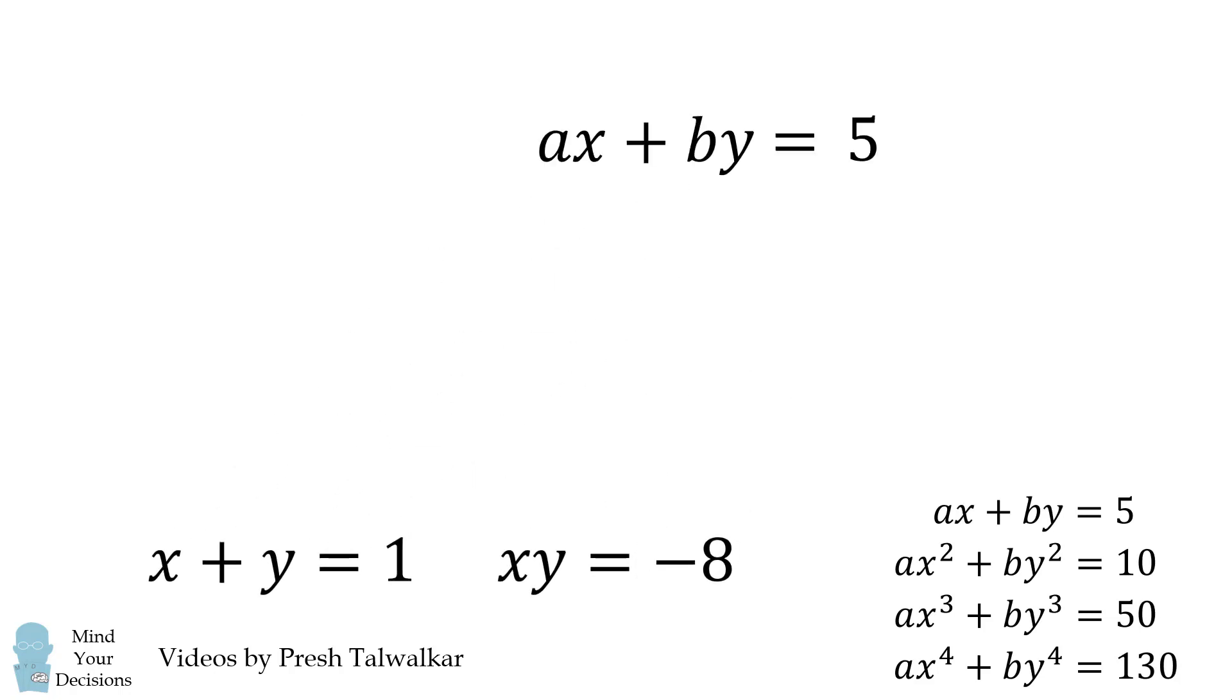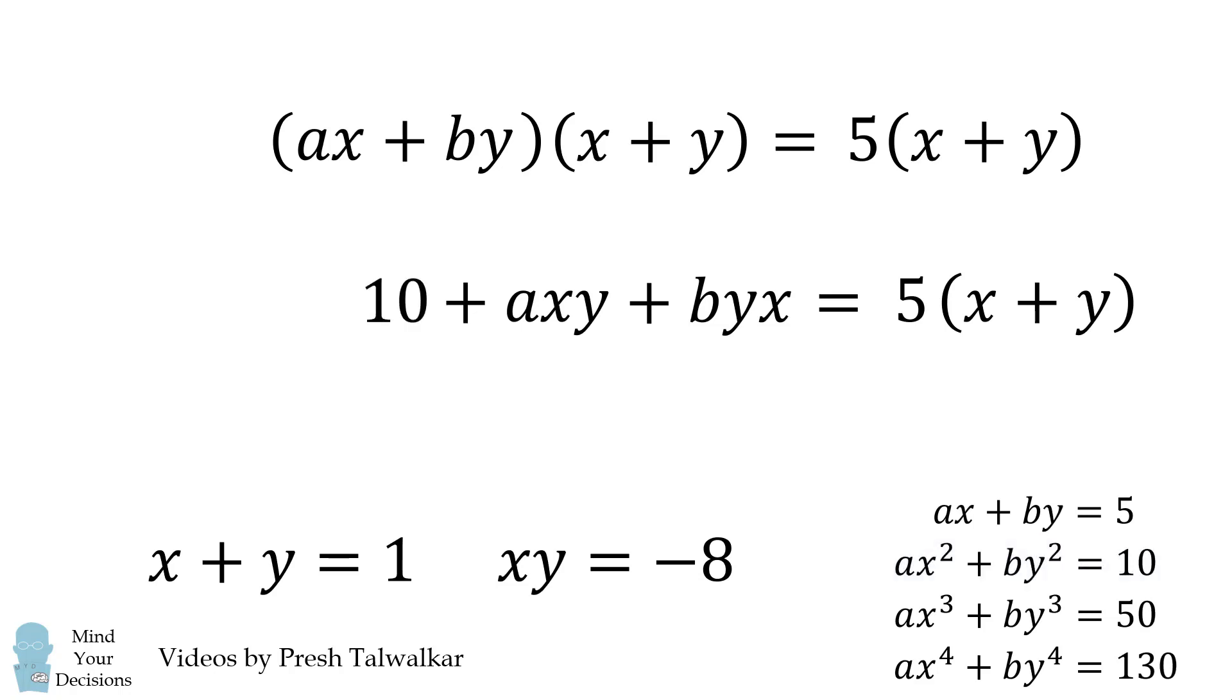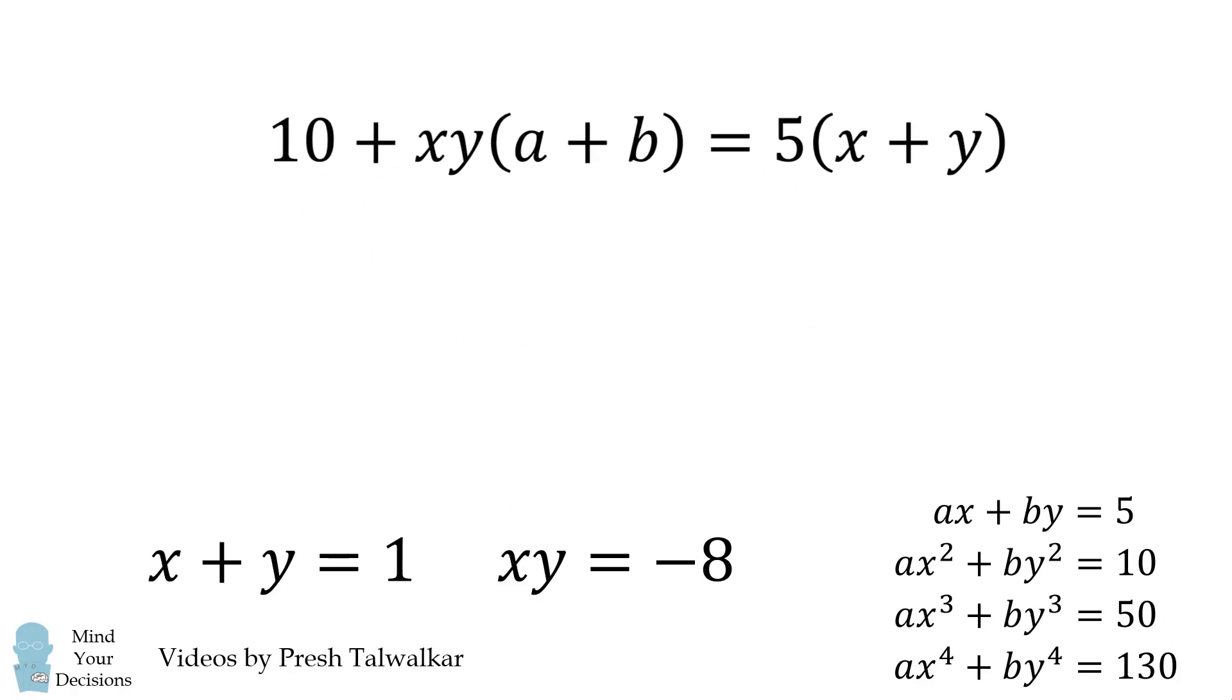We're making good progress, and now we'll consider the linear equation. We'll multiply both sides by the quantity x plus y. We'll then distribute on the left-hand side, and we're going to end up with an equation which we'll simplify. Here, ax squared plus by squared is equal to 10. Then we factor an xy, and we're left with a factor of a plus b.